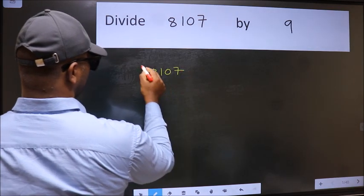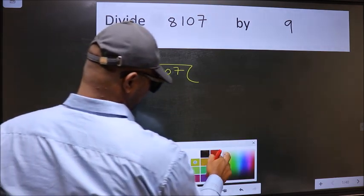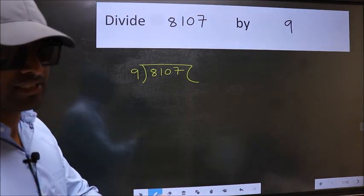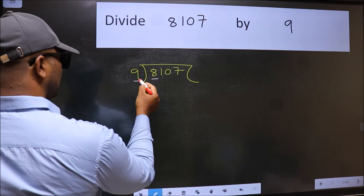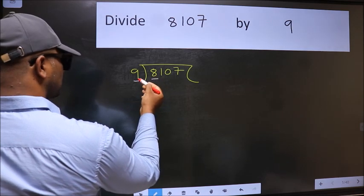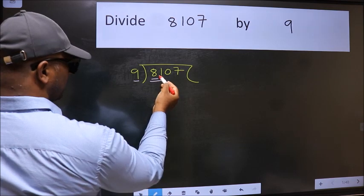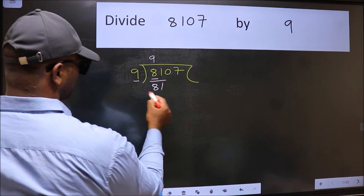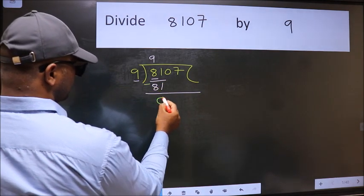8107 and 9 here. This is your step 1. Next, here we have 8 and here 9. 8 is smaller than 9. So we should take two numbers, 81. When do we get 81 in 9 table? 9 times 9 is 81. Now we should subtract. We get 0.